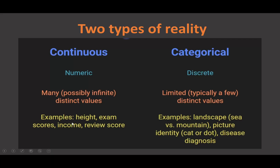For example, height is not a fixed value — for some people it's 5.9, for some it's 6.1, some are under 5. Categorical data, on the other hand, is a discrete value with a limited, typically few distinct values — for example, landscape categories like sea versus mountain pictures, identity like cat or dog, or disease diagnosis. It means categories: either one or zero.